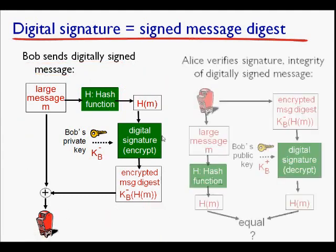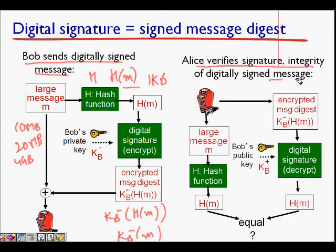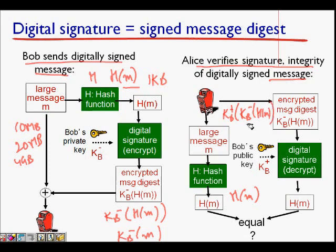Alice verifies the signature and integrity of the digitally signed message. She gets the large message, and since the hash function is shared and known to her, she computes H(M) on her side. She also has KB-minus(H(M)) sent by Bob. She applies Bob's public key to KB-minus(H(M)) and gets H(M). If both H(M) values match, the digital signature is correct.